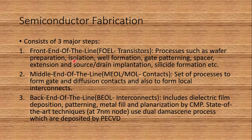Modern semiconductor fabrication has three major stages: front end of the line, middle end of the line, and back end of the line. In front end of the line, transistors are fabricated through processes such as wafer preparation (Czochralski process), isolation, well formation, gate patterning, spacer, extension and source-drain implantation, and silicide formation.